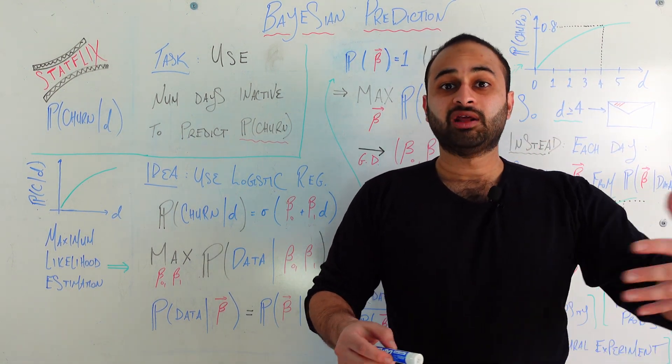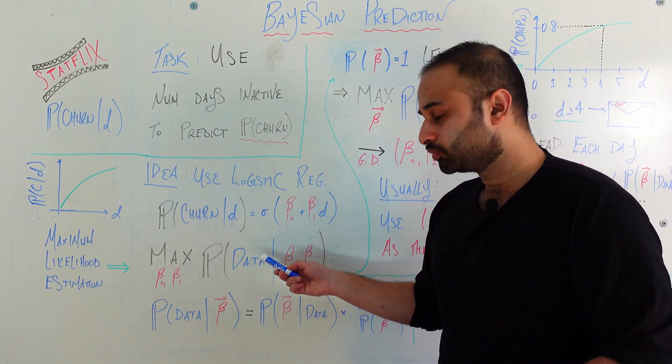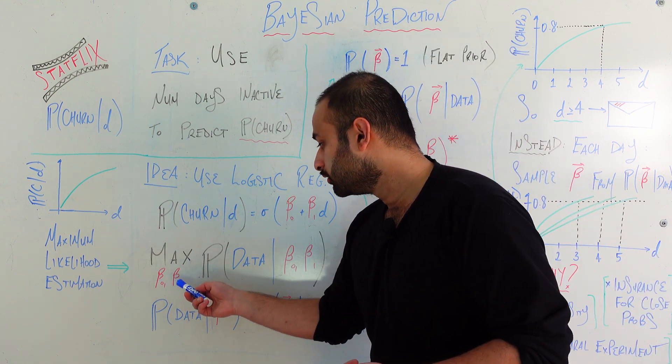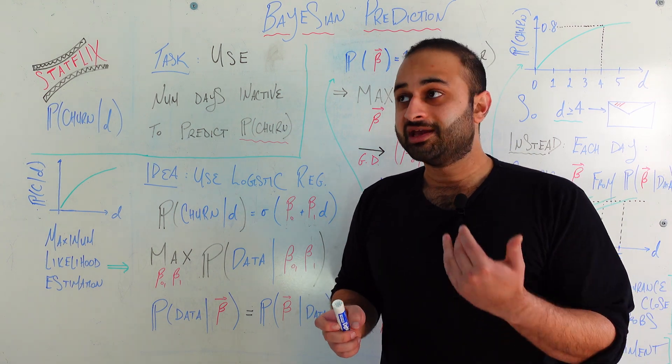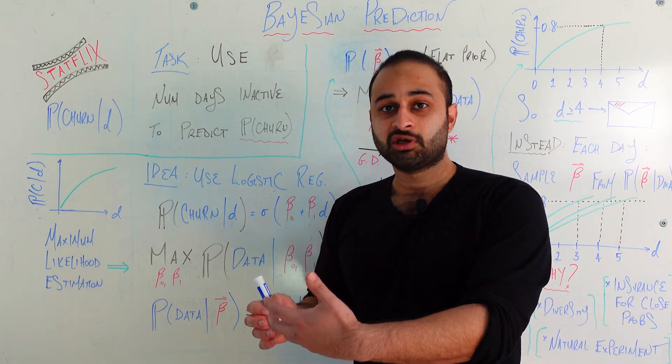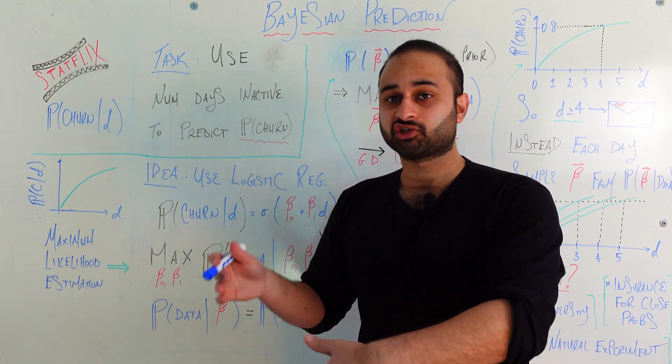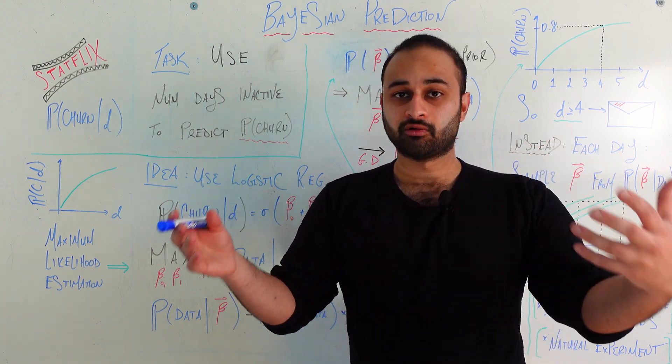And of course we know that we typically use maximum likelihood estimation or MLE in order to figure out these two coefficients. And MLE amounts to just solving this optimization problem. Find the beta naught and beta one which maximize the probability of observing my training data given that setting of betas.